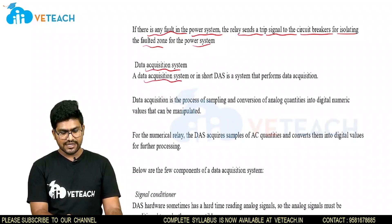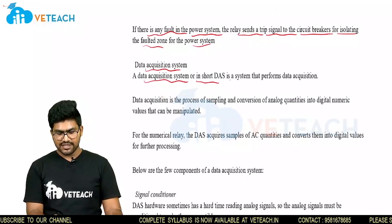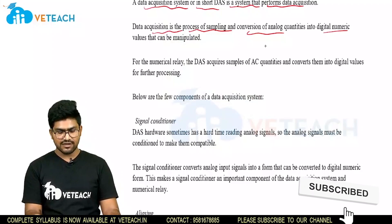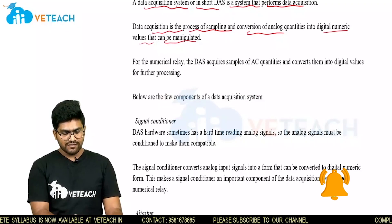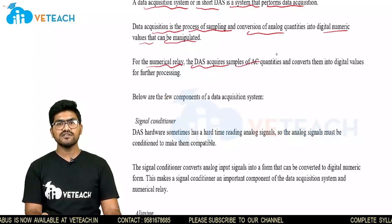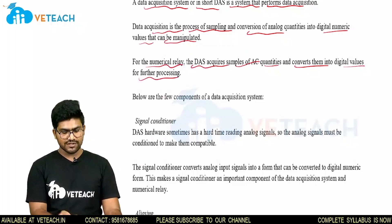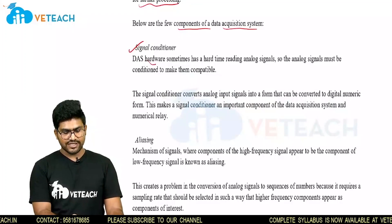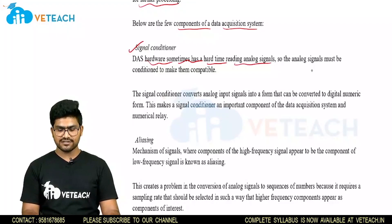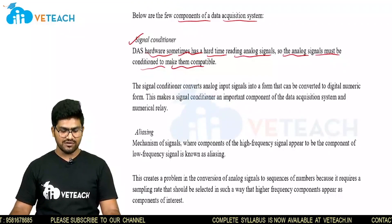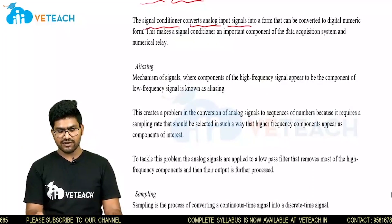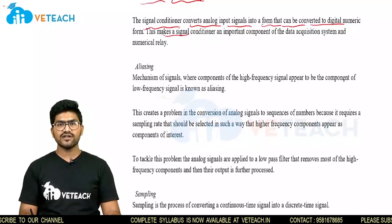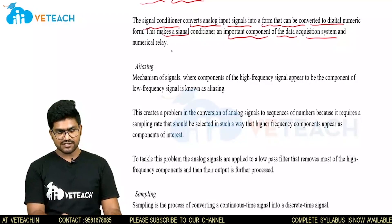Data acquisition system — a data acquisition system, or DAS in short, is a system that performs data acquisition. Data acquisition is the process of sampling and conversion of analog quantities into digital numerical values that can be manipulated. For the numerical relay, the DAS requires samples of AC quantities and converts them into digital values for further processing. Below are a few components of data acquisition systems. The first is the signal conditioner. DAS hardware sometimes has difficulty recording analog signals, so the analog signals must be conditioned to make them compatible. The signal conditioner converts analog input signals into a form that can be converted into digital numerical values, making it an important component of the data acquisition system and numerical relay.